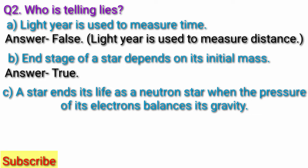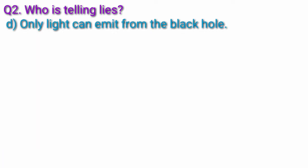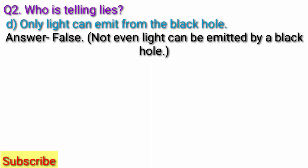Question C, a star ends its life as a neutron star, when the pressure of its electrons balances its gravity. Answer, false. A star ends its life as a neutron star when the pressure of its neutrons balances its gravity. Question D, only light can emit from the black hole. Answer, false. Not even light can be emitted by a black hole.